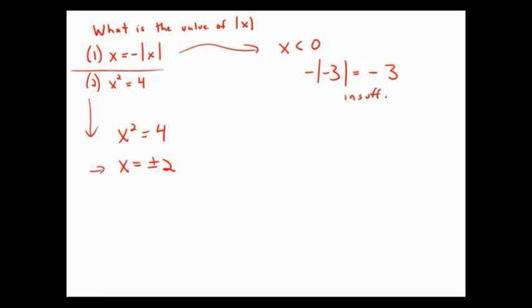So knowing that x squared equals four does not uniquely determine x. But what's interesting is that if we take the absolute value of either one of these, we get two.